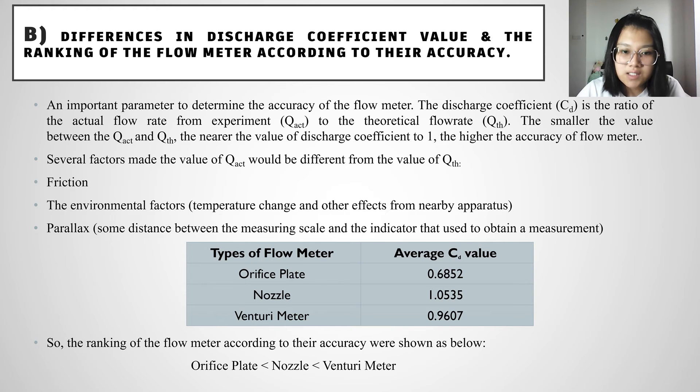Next is for the nozzle average CD value. We can see that the nozzle average CD value is nearer to 1 if we make a comparison with the orifice plate. We can rank the flow meter according to their accuracy where the venturi meter will be the most accurate flow meter and then followed by the nozzle and then followed by the orifice plate.